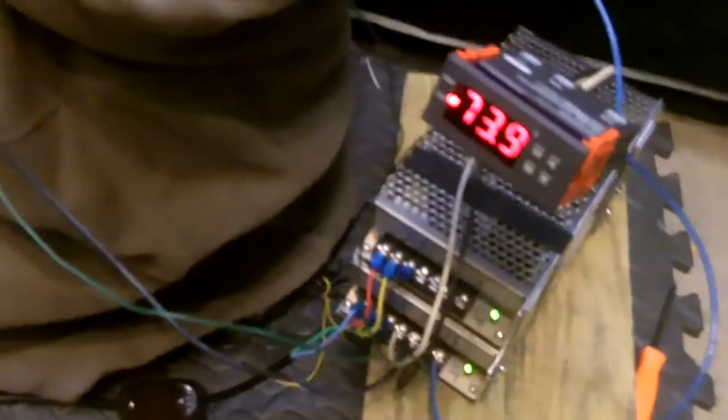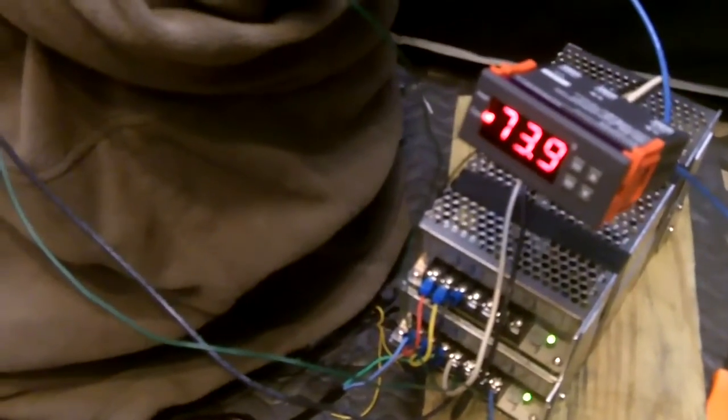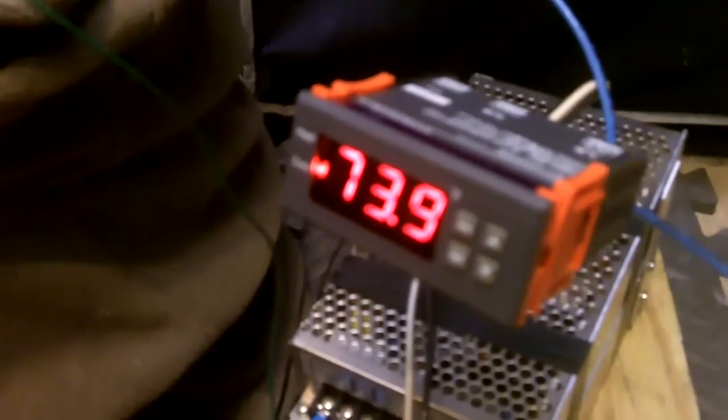Okay so this has been running for probably close to 24 hours and current temperature in here is 78 degrees and the thermocouple for the controller says it's down to about 73.9.